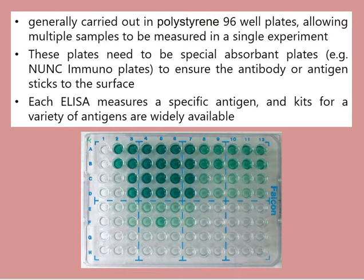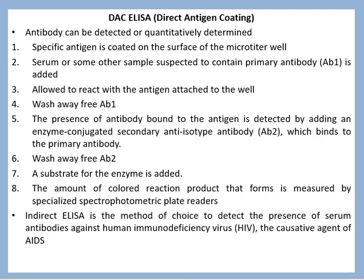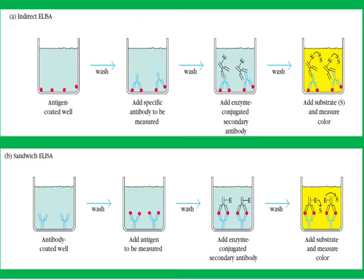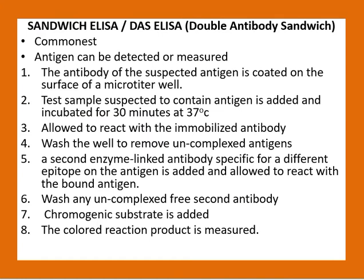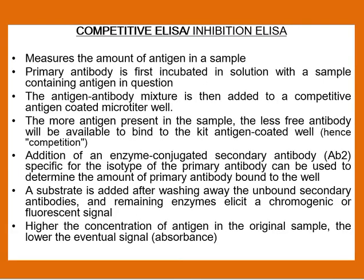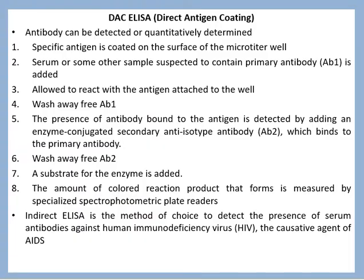There are different ELISA kits and each kit will measure a particular antigen, and kits for a variety of antigens are widely available. The color difference can be measured with the help of a spectrophotometer. There are different types of ELISA, of which the most important are: DAC ELISA (direct antigen coating ELISA), sandwich ELISA or DAS ELISA (double antibody sandwich ELISA), and competitive ELISA.